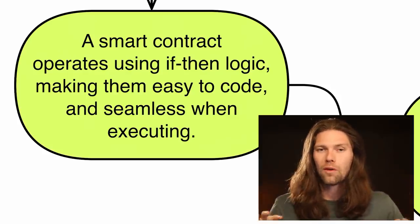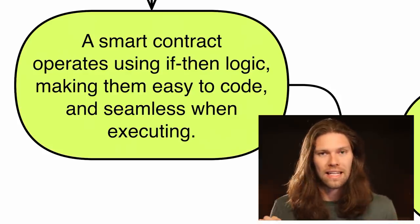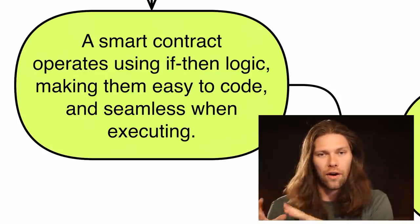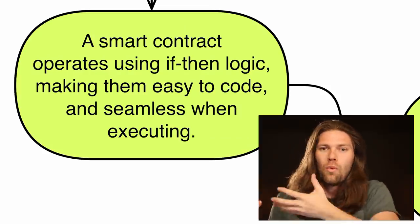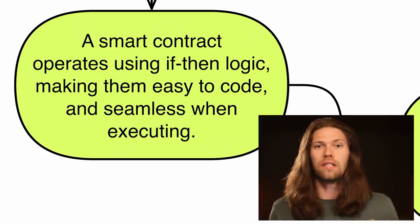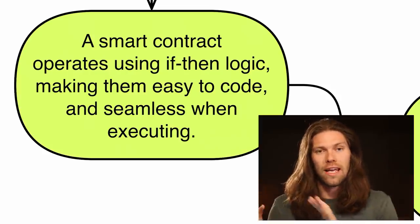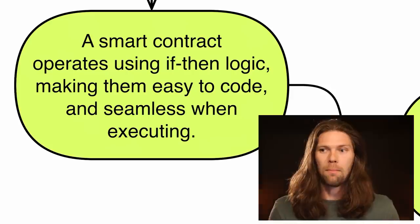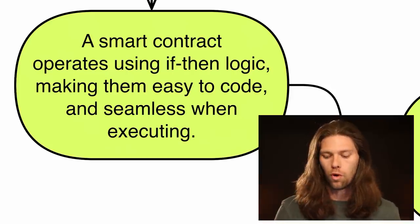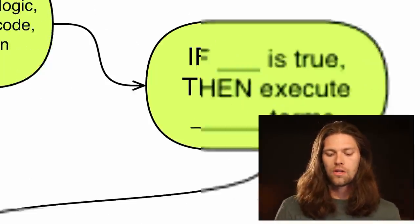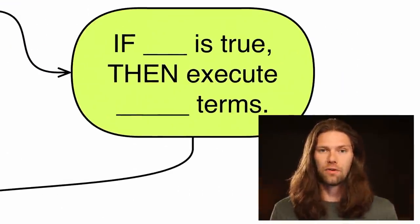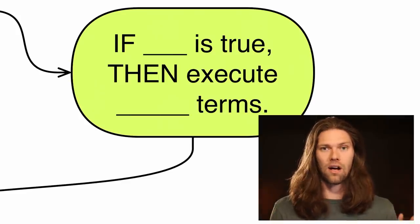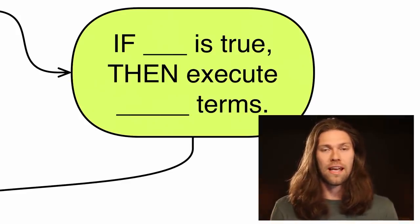It's actually so black and white that there are some complaints about how there isn't enough gray area within smart contracts, but that's just one kink that will need to be worked out in the future as this tech becomes more and more robust. If blank is true, then execute blank terms — it's as simple as that.